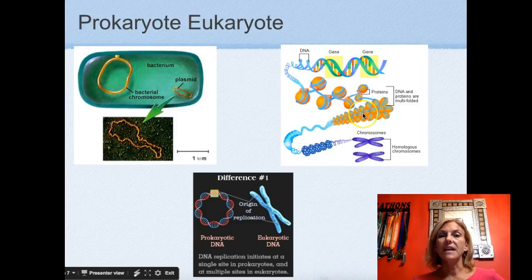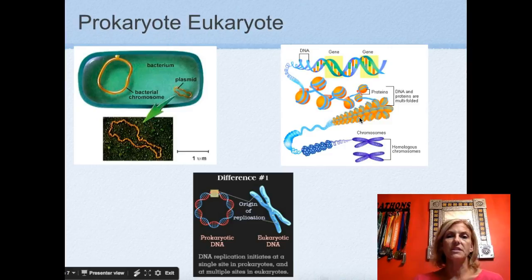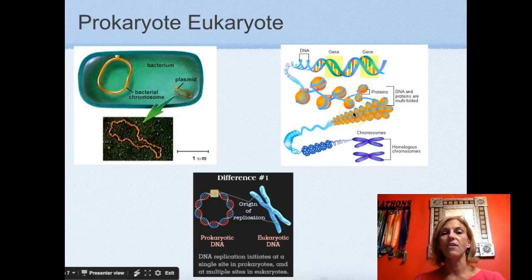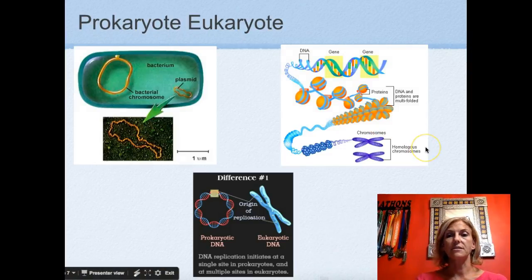This coiling actually makes it difficult for our polymerase to read DNA at all times, which is part of our gene regulation. We only unpack or uncoil our DNA — making it accessible — when we need certain proteins to be made.